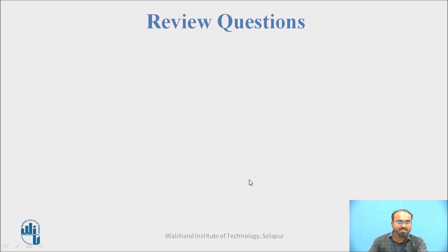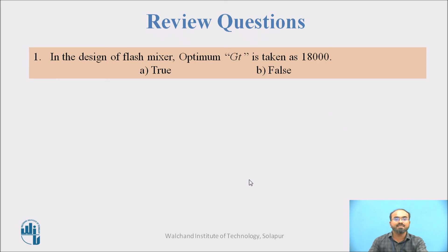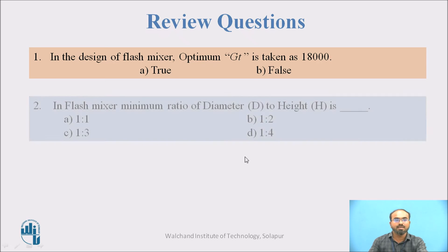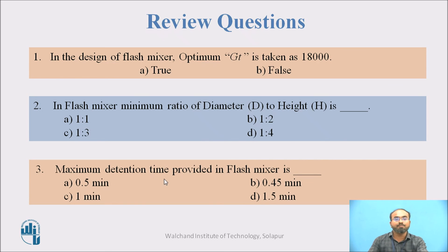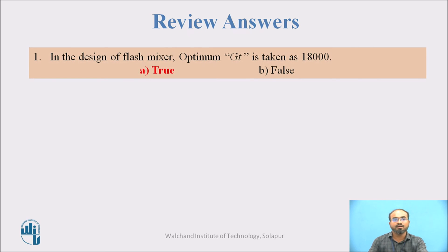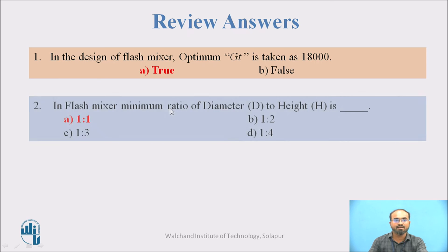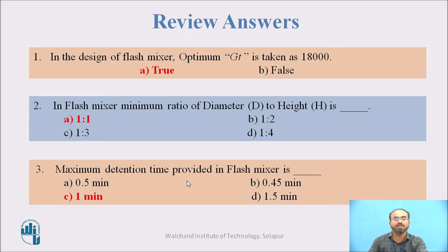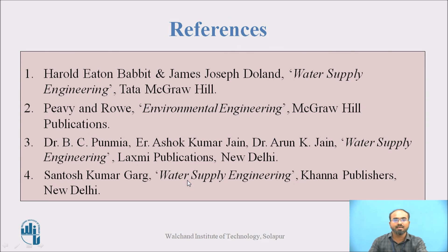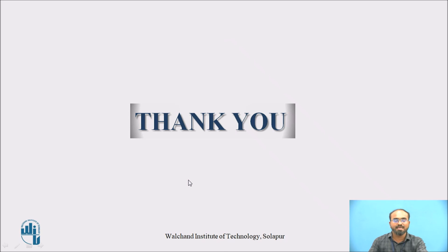A few review questions: First, in the design of a flash mixer, optimum GT is considered to be 18,000 — is this statement correct or false? Second, in a flash mixer, the ratio of diameter to height is kept between 1:1, 1:2, 1:3, or 1:4? Third, what is the maximum retention time provided — 1 minute or 60 seconds? These are the references used to make this presentation. Thank you.